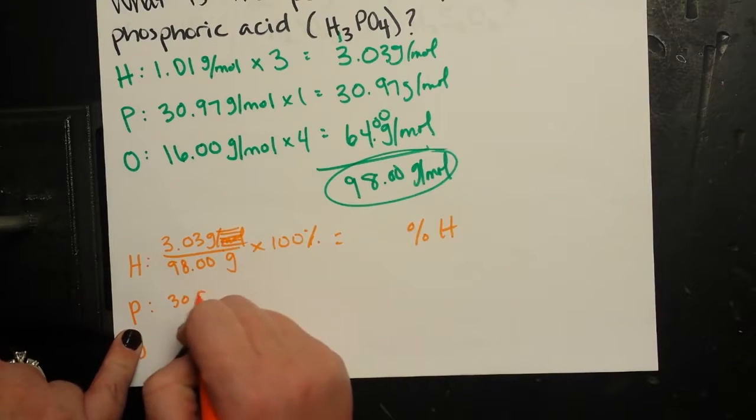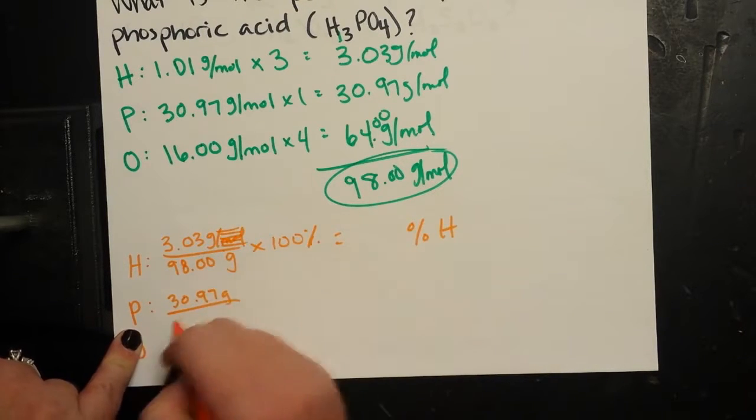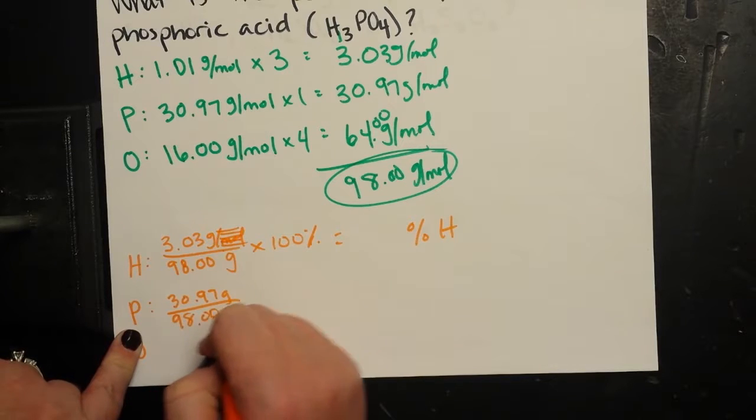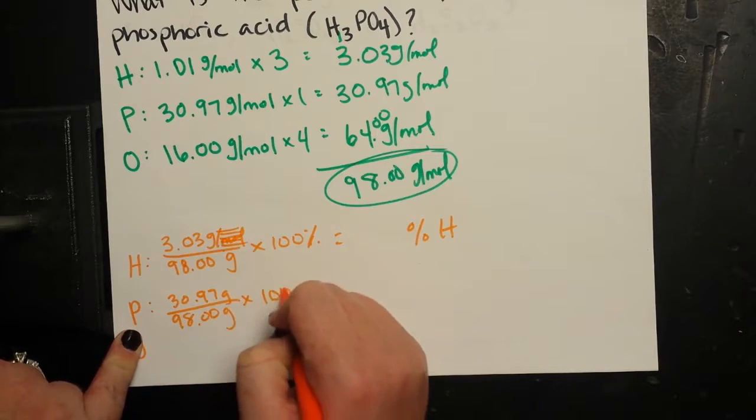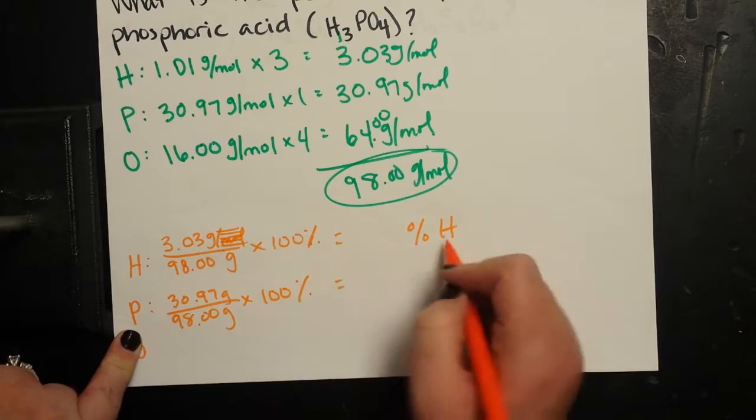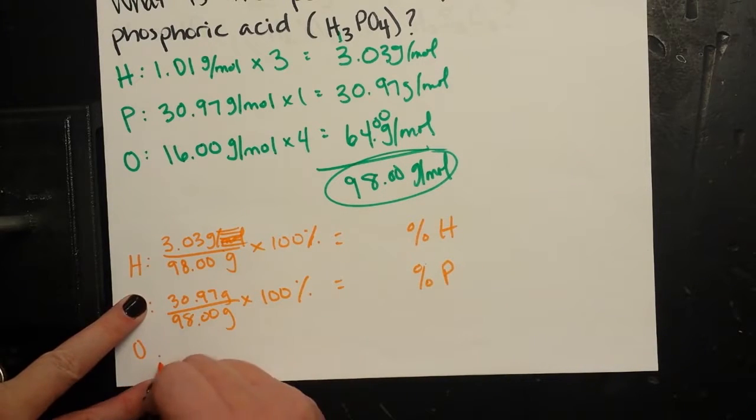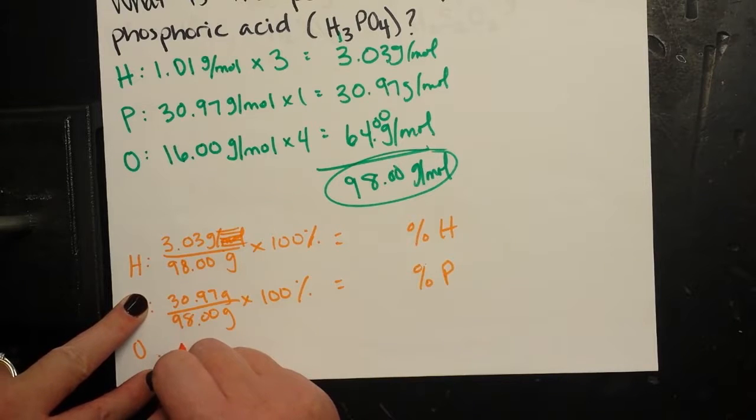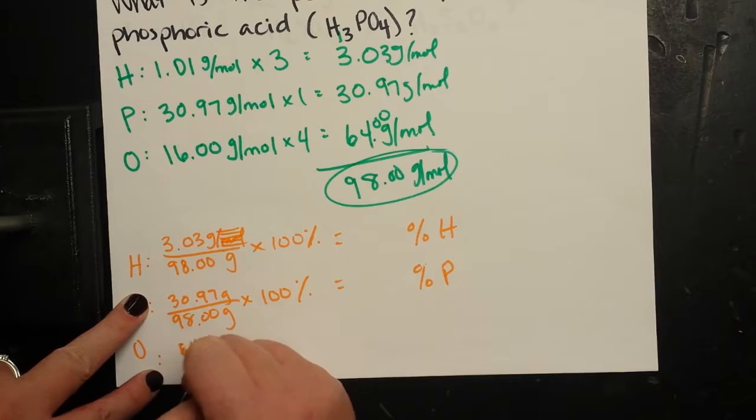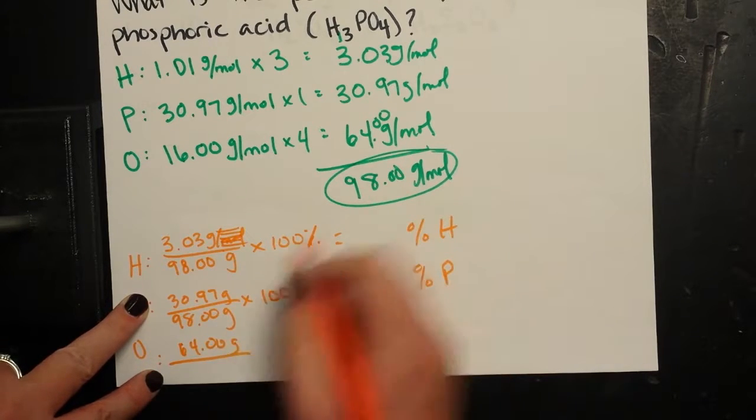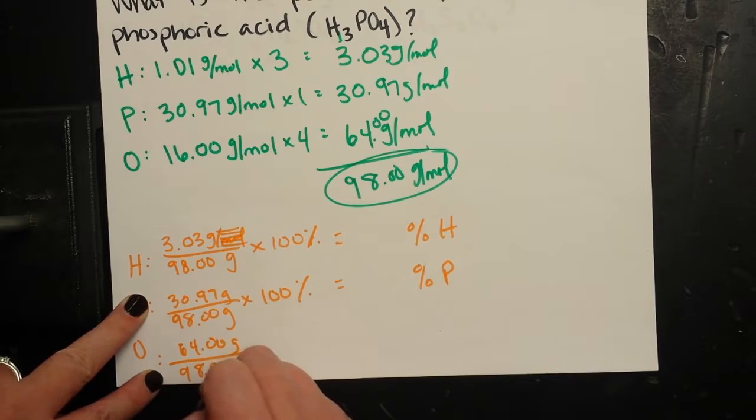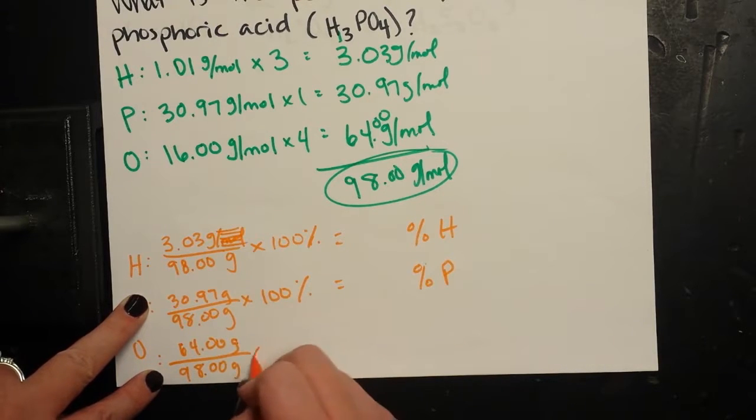Phosphorus contributes 30.97 grams per mole out of the 98 grams that that mole of the compound would weigh. That's going to give me my percent phosphorus. And then my oxygen contributes 64 grams for every 98 grams of the compound.